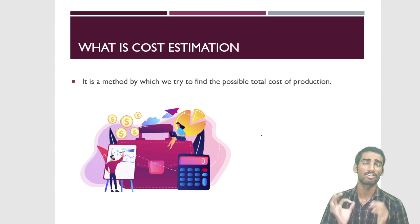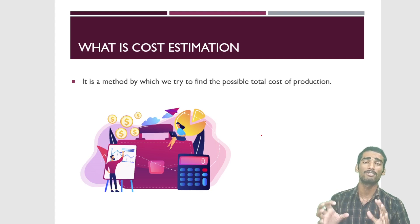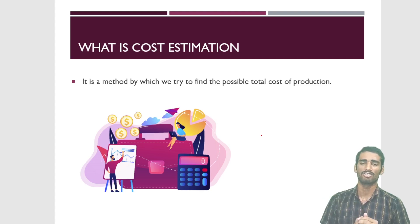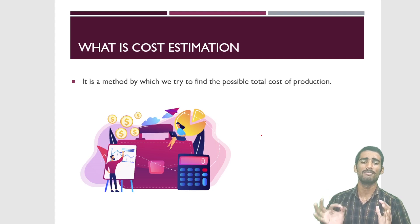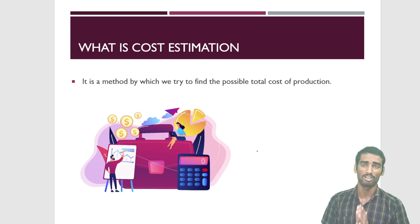Let us come to the first topic — what is cost estimation? It is clear from the word itself: cost estimation means to estimate the cost. It is a method by which we try to find the possible total cost of production. For example, suppose you are planning for a birthday party — before doing that, you make an estimate of what possible costs may arrive. You come to a particular value. This whole process we call cost estimation — to estimate the cost of a particular project.